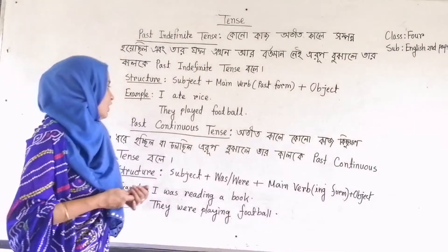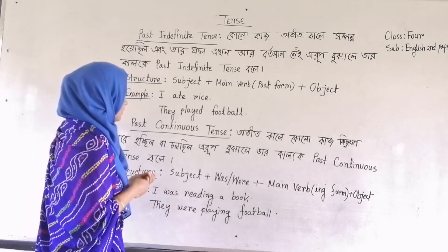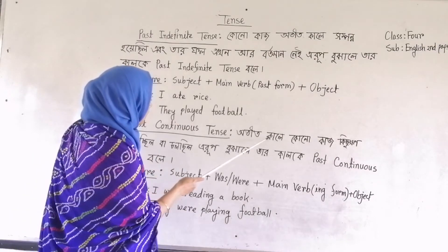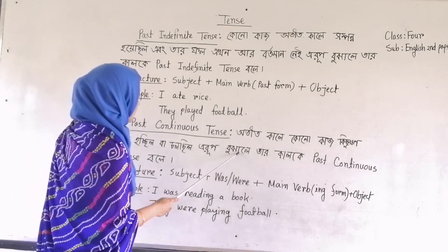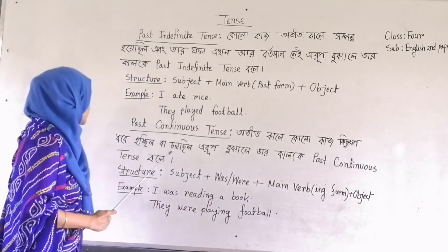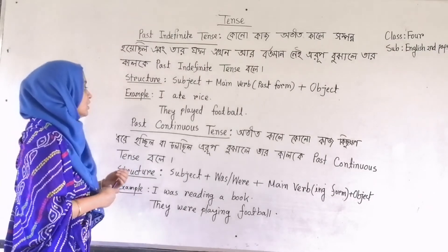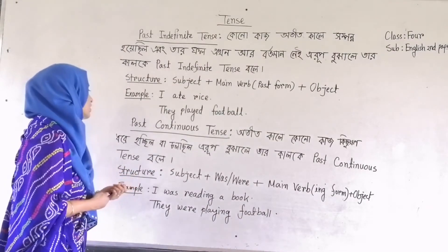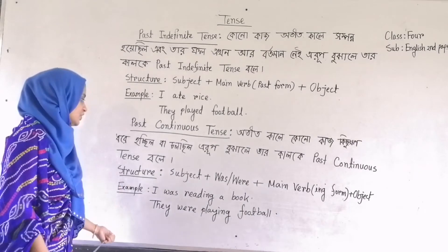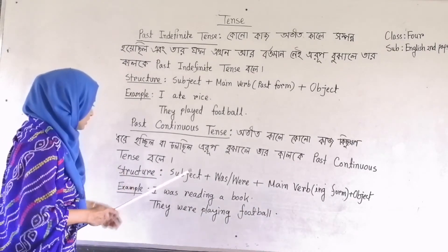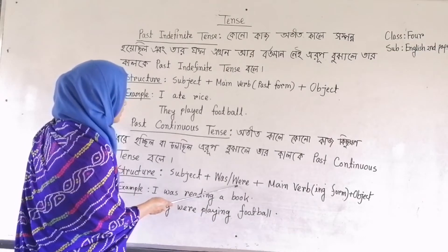Now come to the definition of past continuous tense. Past continuous tense indicates the action that was going on for some time in the past. Now come to the structure — I have written the structure here.